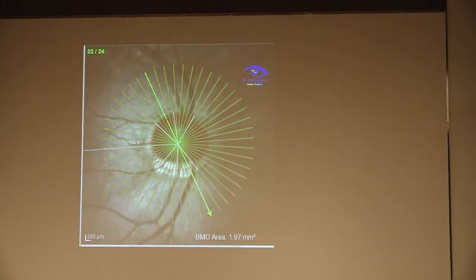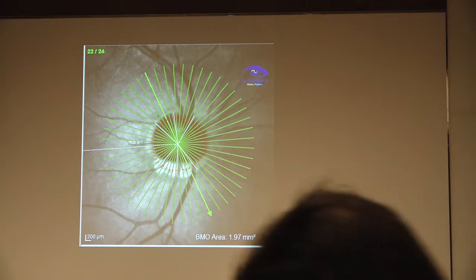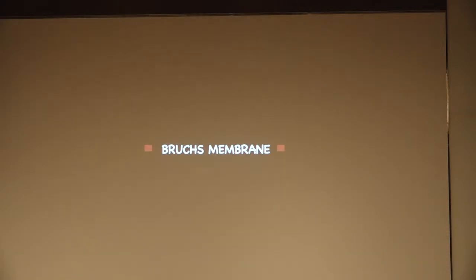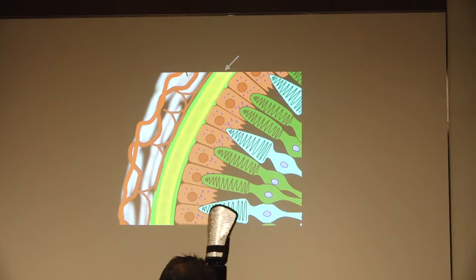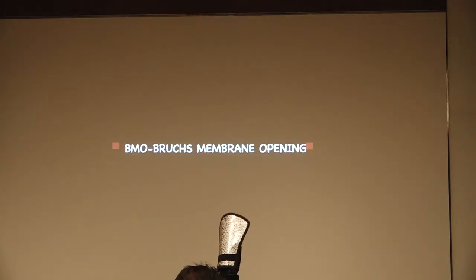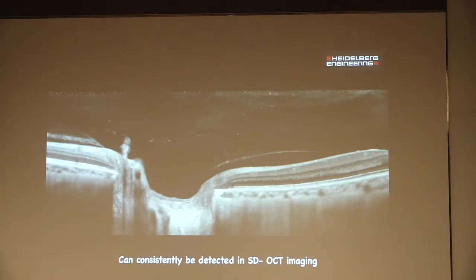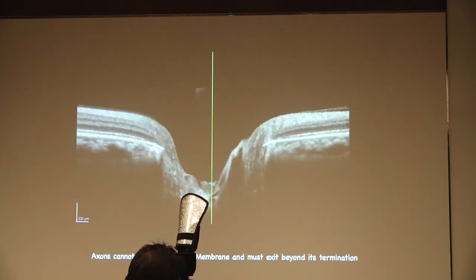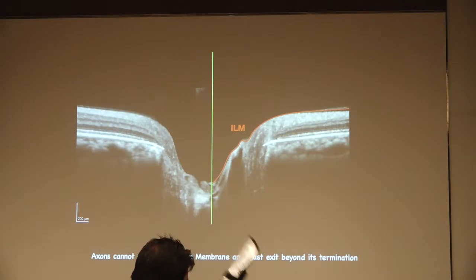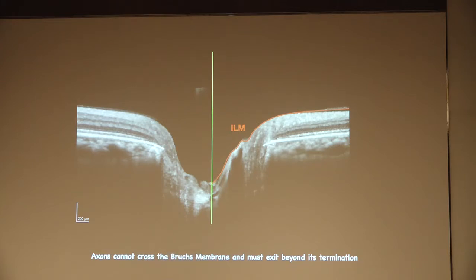The Bruch's membrane opening is marked with the help of OCT. What is Bruch's membrane? Bruch's membrane is nothing but a part of the choroid. The Bruch's membrane opening is a termination of Bruch's membrane, and this can be consistently detected in SD-OCT imaging. We also have the internal limiting membrane, which is considered as the margin of the neuroretinal rim.